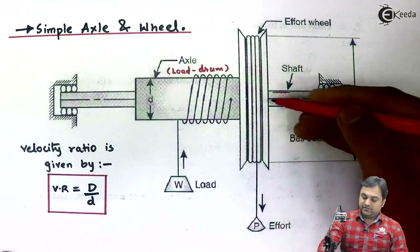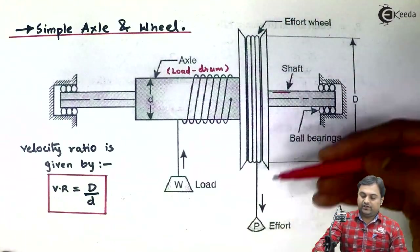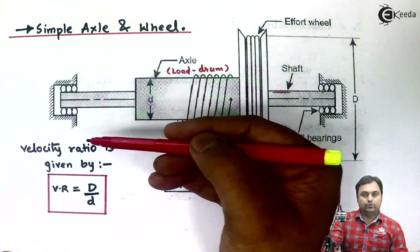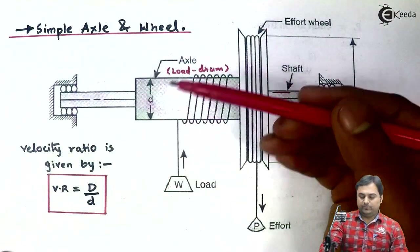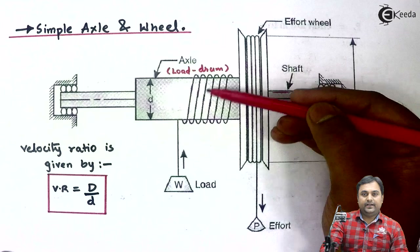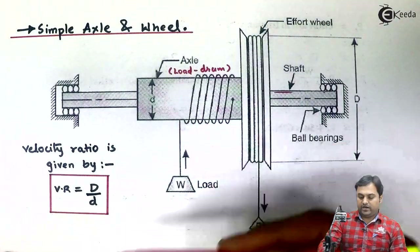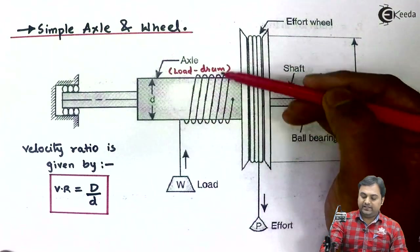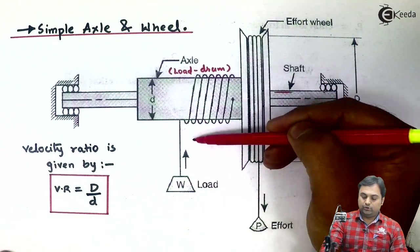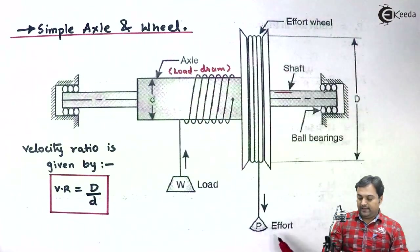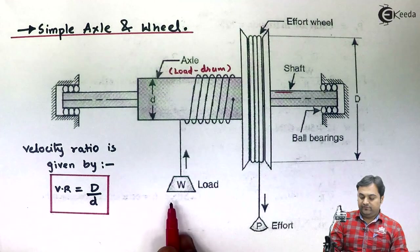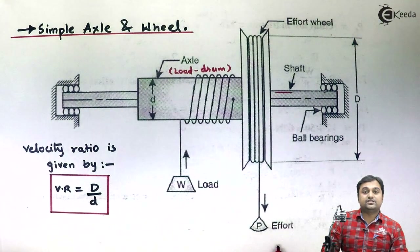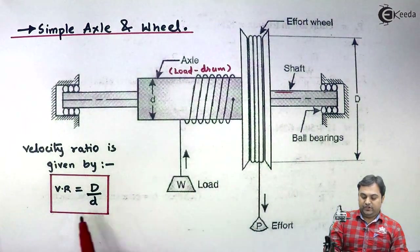We apply effort by hand or by attaching a small weight to the effort wheel. The effort wheel rolls and, since it is connected to the load drum, the load drum also rolls. The string winds around the load drum and as it winds, the load is lifted up. By applying very small effort, we lift a huge amount of load.